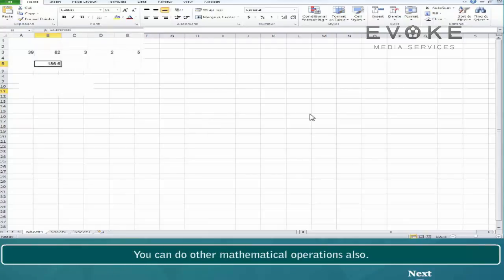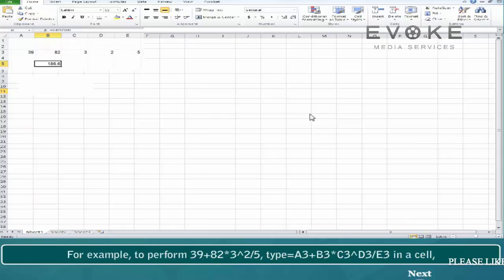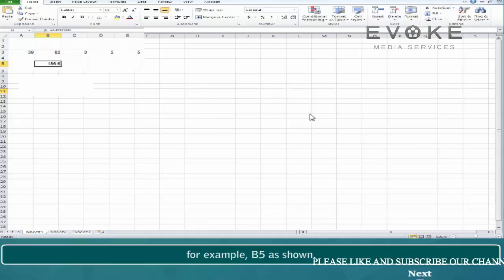You can do other mathematical operations also. For example, to perform 39 plus 82 into 3 to the power 2 by 5, type equals to A3 plus B3 into C3 to the power D3 by E3 in a cell, for example B5 as shown.